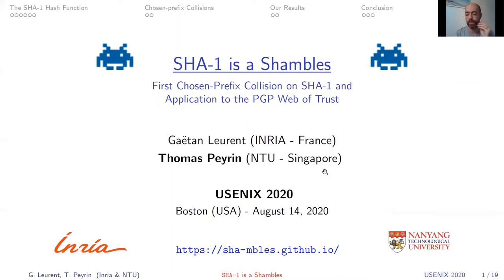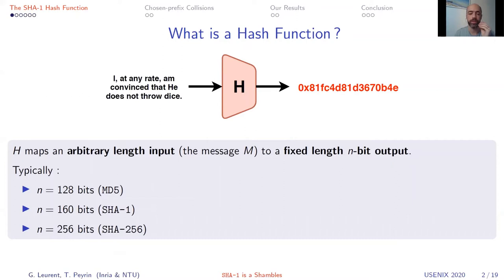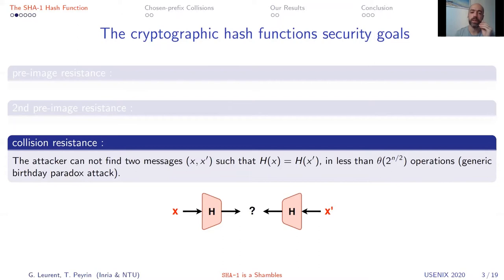Before I start explaining our results, I would like to quickly mention what a hash function is. A hash function is simply a function that takes an arbitrary long input and outputs a fixed size hash value. Typically the hash value will be n bits, where n equals 128 bits in the case of MD5, or 160 bits used in SHA1, or nowadays 256 bits. Hash functions in cryptography must ensure several security properties — one of them is being hard to invert, and another is collision resistance.